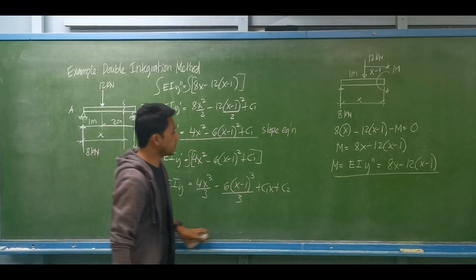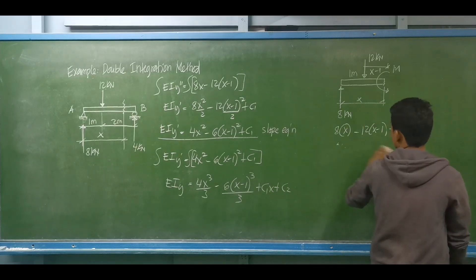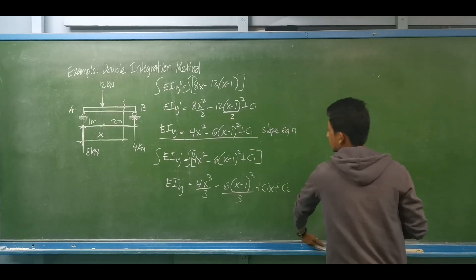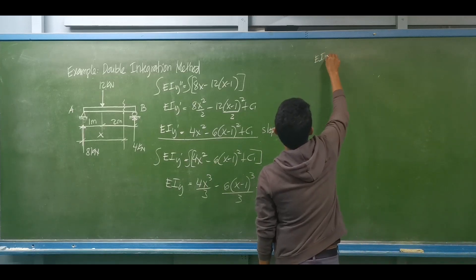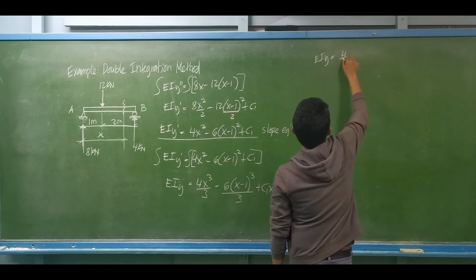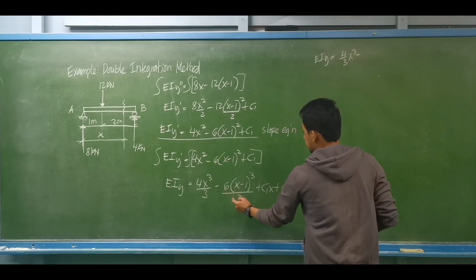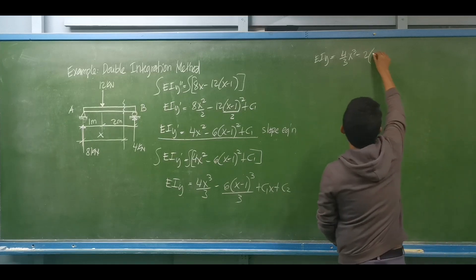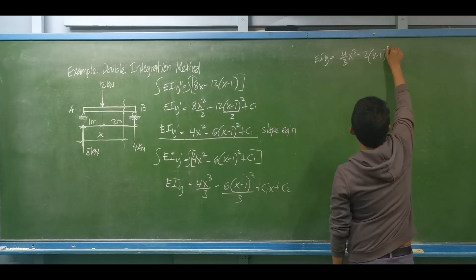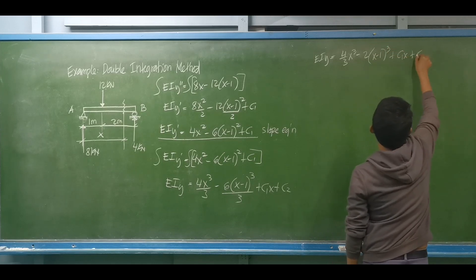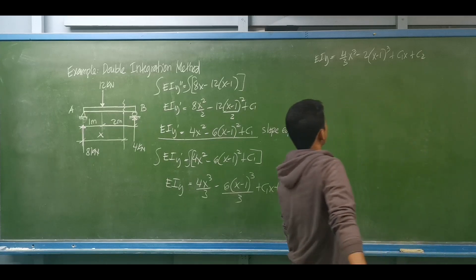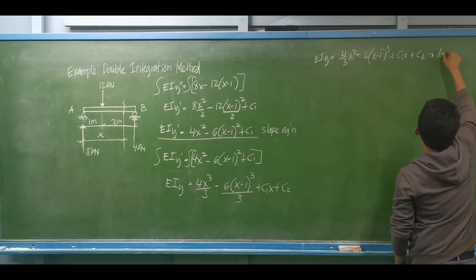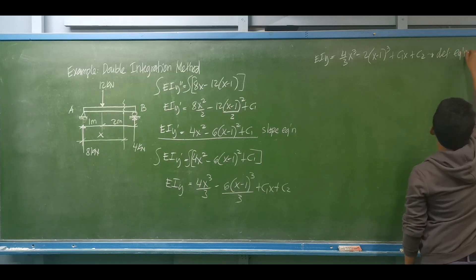Simplifying, this is now the deflection equation: EI y is now equal to (4/3)x cubed minus 2(x minus 1) cubed plus C1x plus C2. All we have to do is determine the values of these arbitrary constants.